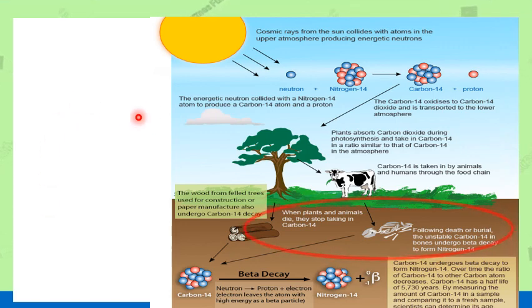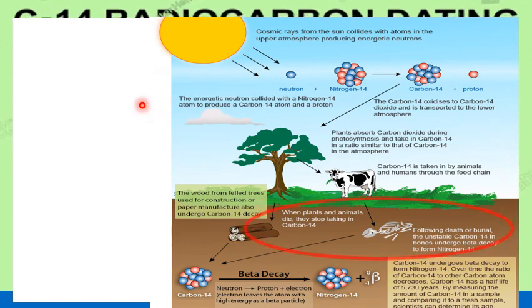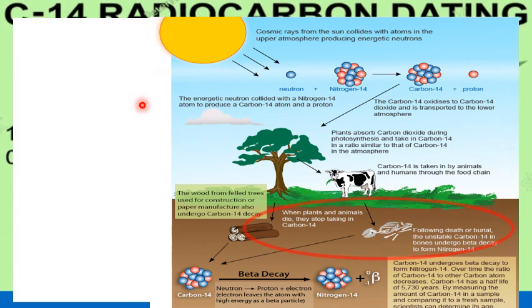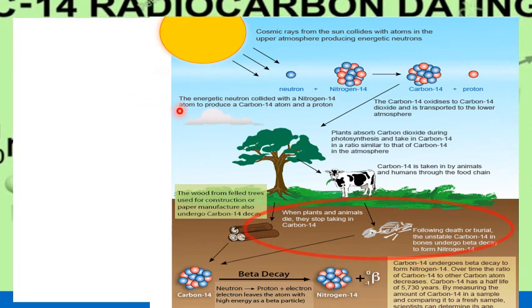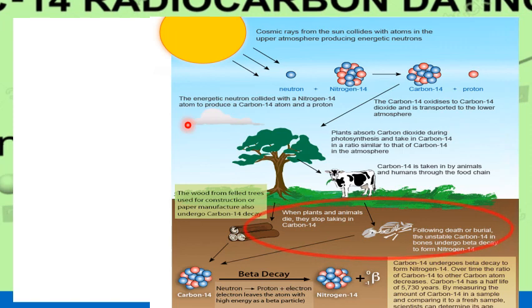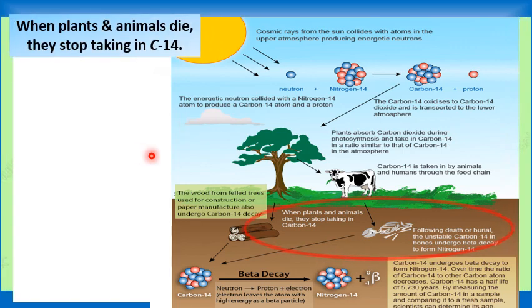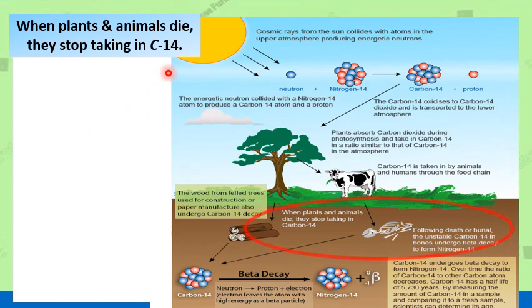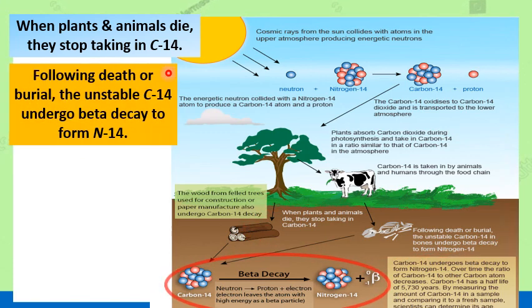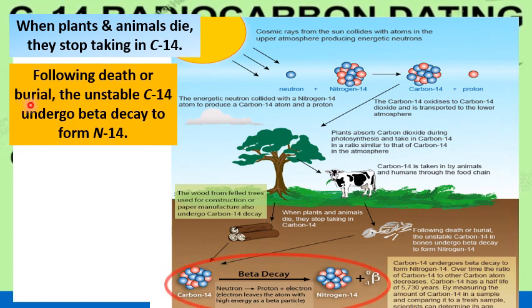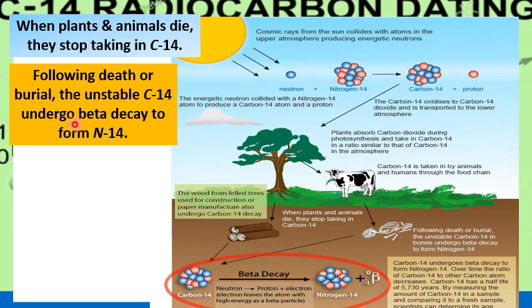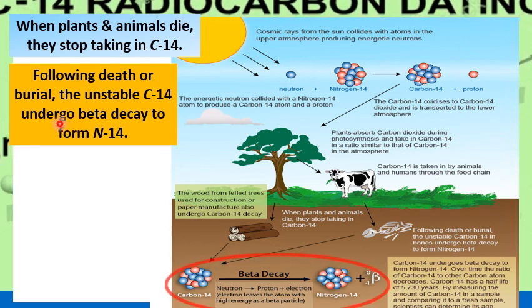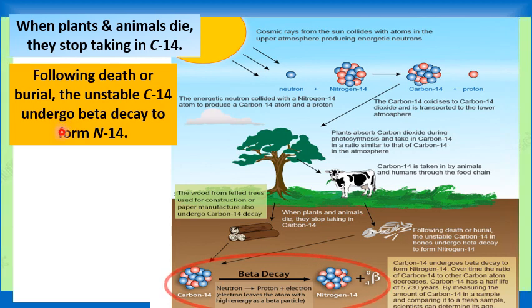Radiocarbon decays slowly in a living organism and the amount lost is continually replenished as long as the organism takes in air or food. When plants and animals die, they stop taking in carbon-14. So following death or burial, the unstable carbon-14 undergoes beta decay to form nitrogen-14.